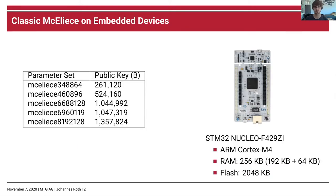Classic McEliece is known for its big public keys. For the shown parameter sets, they are around a quarter megabyte to over a megabyte. This is challenging for embedded systems since they often don't have many resources at their disposal.